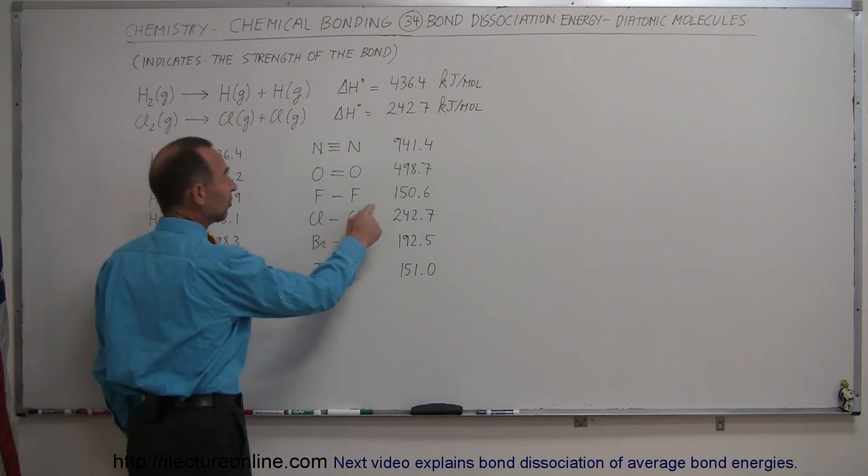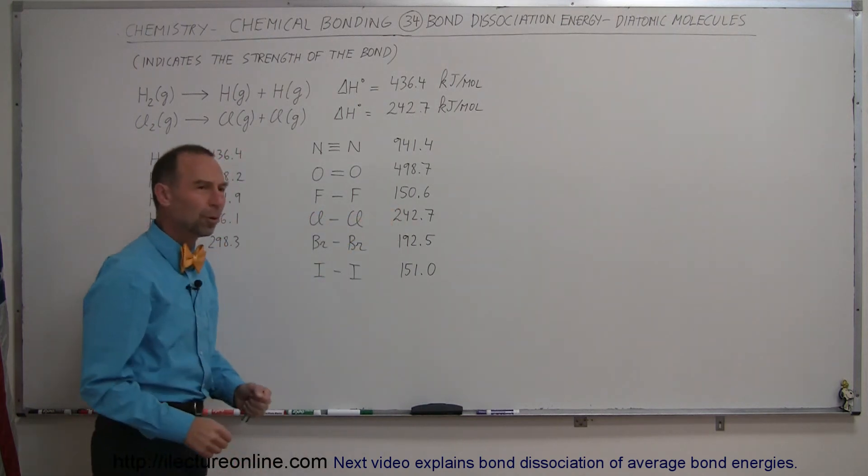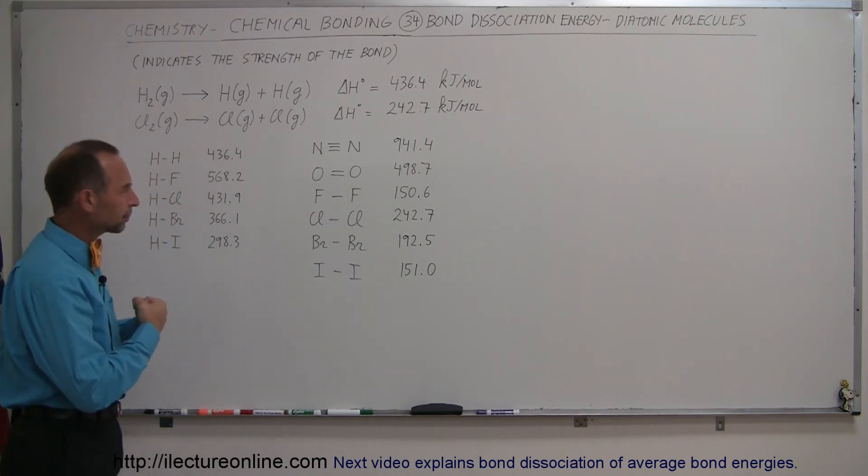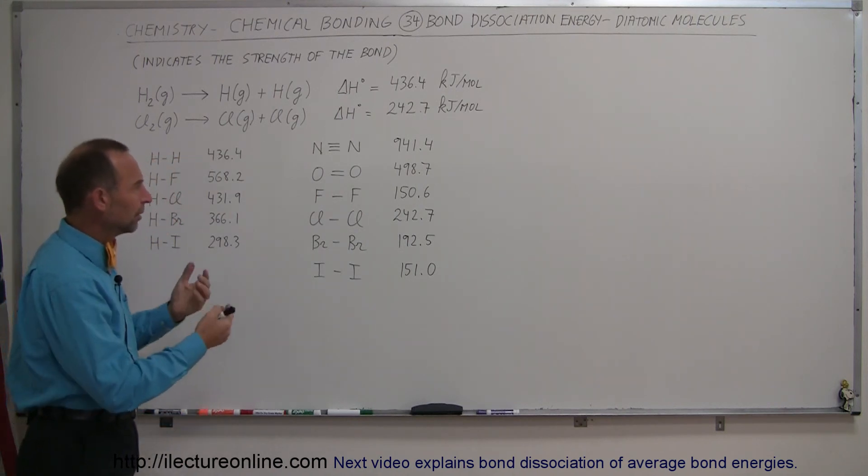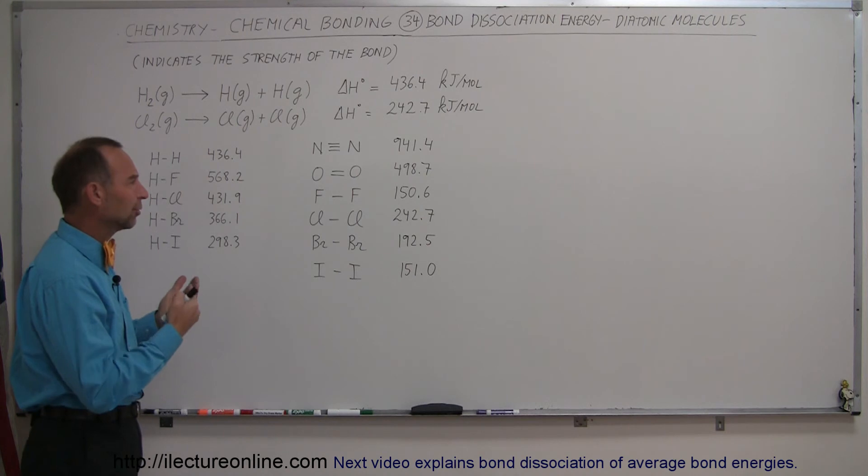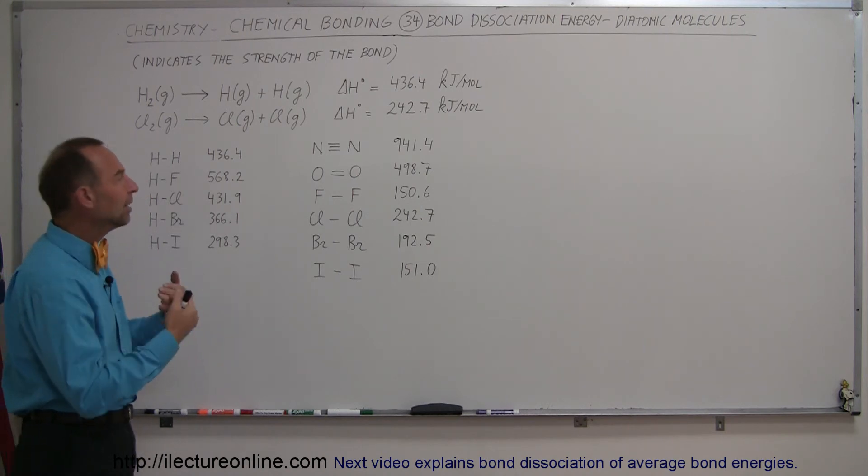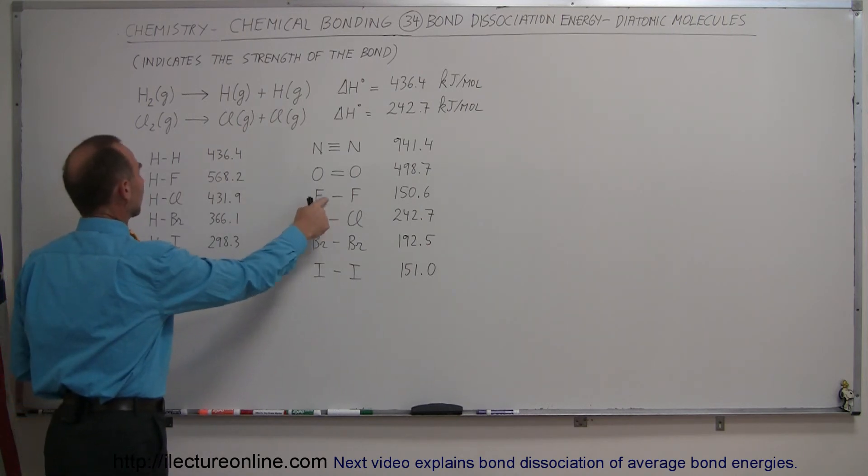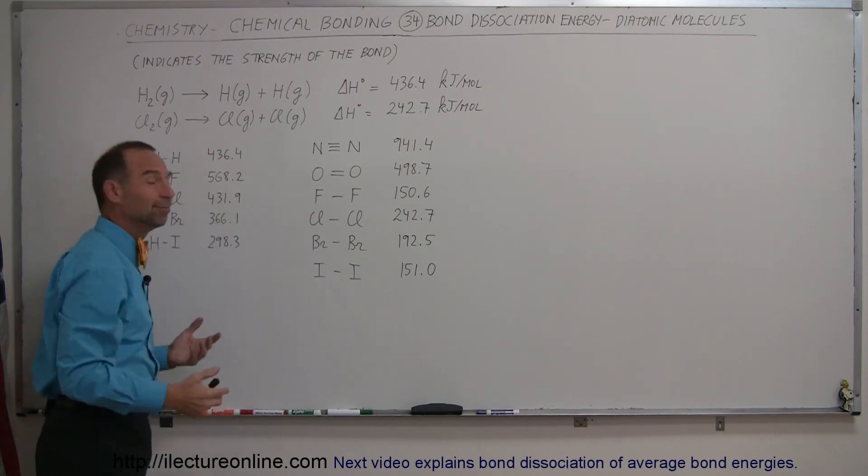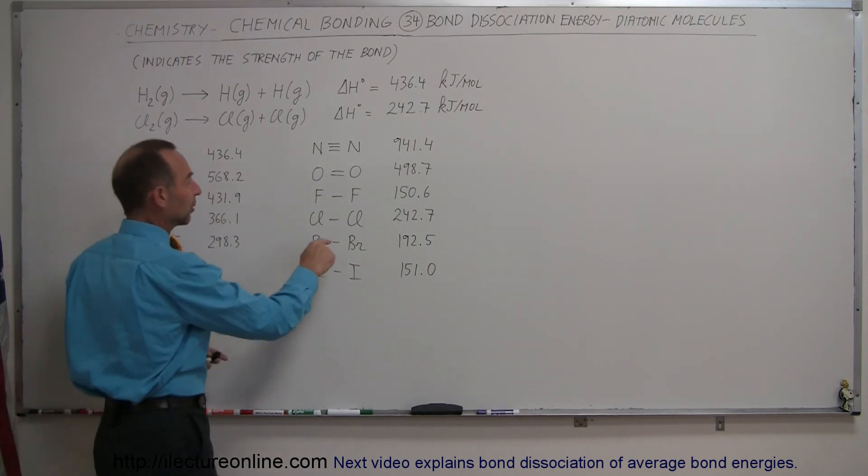Fluorine to fluorine, which is interesting, it's only 150 kilojoules per mole. Even though the fluorine molecules have very high electronegativity, they're relatively easy to break. Fluorine makes a lot stronger bond with hydrogen than it does with itself. Kind of an interesting aspect here.